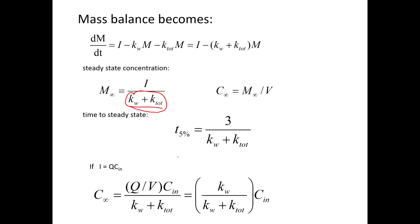Another useful equation lets us calculate the time to steady state — specifically the time to get within 5% of steady state, since you never actually reach it. That's 3 divided by the sum of the rate constants, where the natural log of 0.05 gives roughly −3. For example, the time to steady state in Lake Erie is on the order of a few decades, whereas in Lake Superior it's about a thousand years — with big implications for how you manage that system.